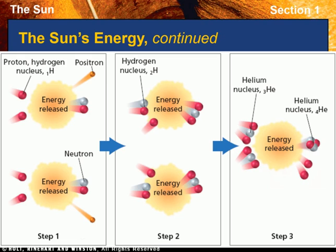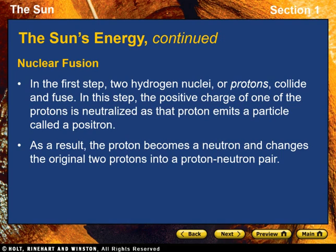Nuclear fusion produces most of the sun's energy and consists of three steps, as shown on screen. In the first step, two hydrogen nuclei, or protons, collide and fuse. In this step, the positive charge of one of the protons is neutralized, as that proton emits a particle called a positron. As a result, the proton becomes a neutron, changing the original two protons into a proton-neutron pair.